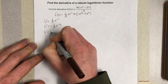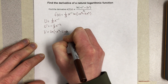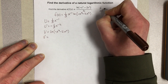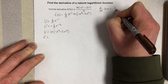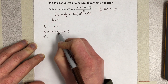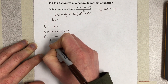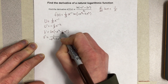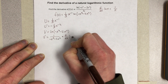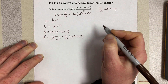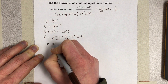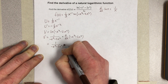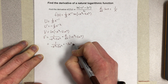v is going to be the natural log of negative x cubed minus 2x squared. And then v prime — remember the derivative of ln(x) is 1/x. So when I take the derivative of ln(-x³ - 2x²), I get 1 over (-x³ - 2x²) times, applying the chain rule, the derivative of the inside, which gives negative 3x squared minus 4x.